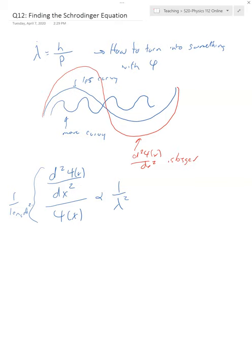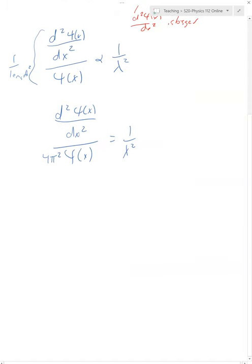And so the only thing that's kind of left to do is deal with the fact that first of all, we have this proportion here. It turns out we can make it an equals if we just put a one over four pi squared on this side. So if we just put a four pi squared over there, then that is just equal to one over lambda squared. And that has to do with the actual way that waves work. I'll just tell you that that is the actual way that you can make that an equals instead of a proportion.